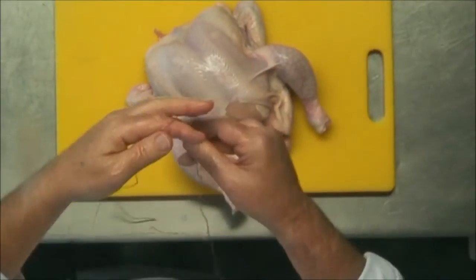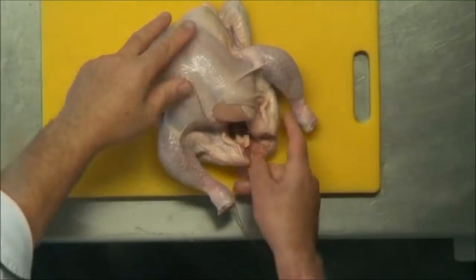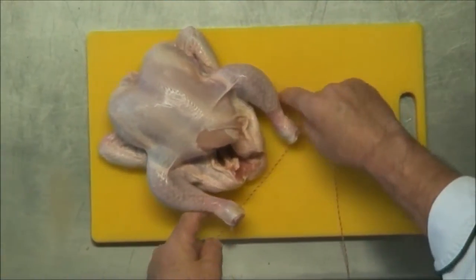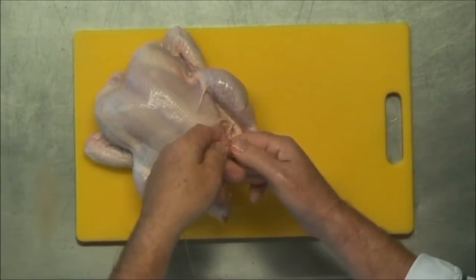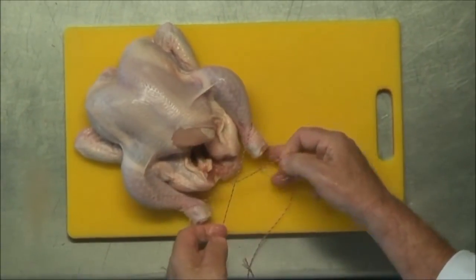We're going to now truss the chicken using string. What we're going to do is bring the string underneath the bird, over the legs, cross the string and then underneath.